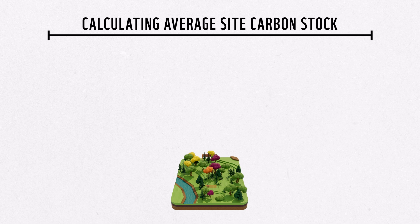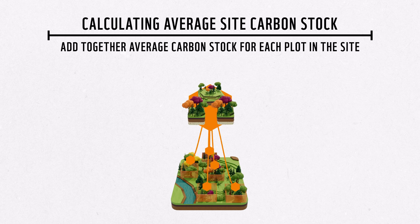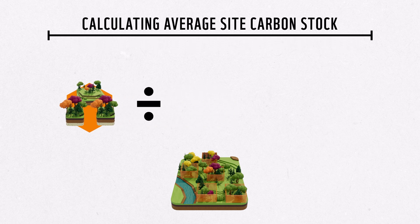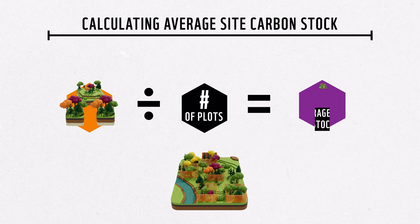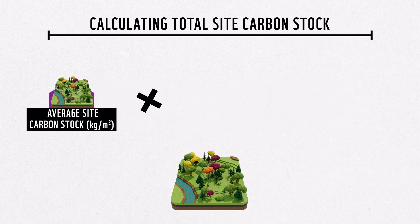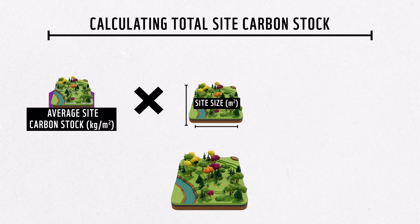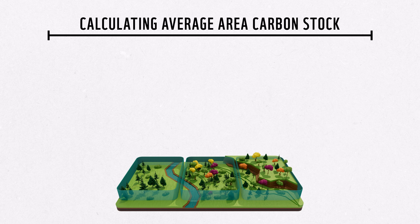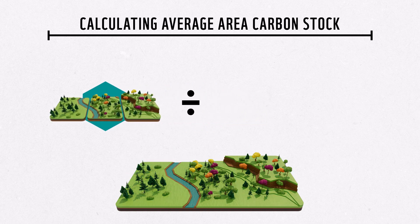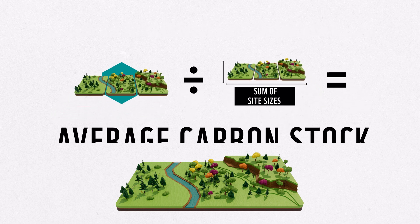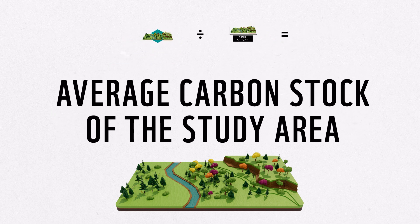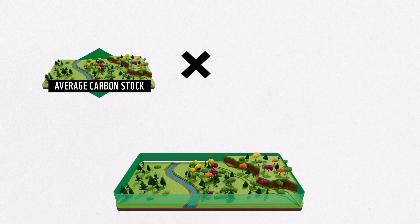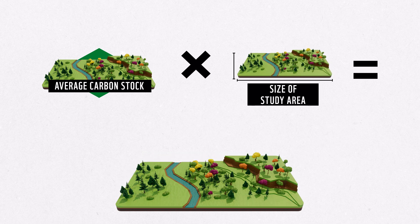Complete this calculation for all the plots in the site. Then, for each site, add all the plots' average carbon stocks and divide this value by the number of plots in the site. Remember that all plots are the same size. This is the average carbon stock across the site. Multiply the average carbon stock of the site by the size of the site in meters-square to obtain the total carbon stock of each site. But what we're really interested in is the carbon estimate for the entire study area. So next, add up the total carbon stocks for the sites and divide by the sum of the site sizes. This gives the average carbon stock of the study area. Finally, if you're interested in total carbon stock of the study area, multiply the average carbon stock of the study area by the size of the study area.